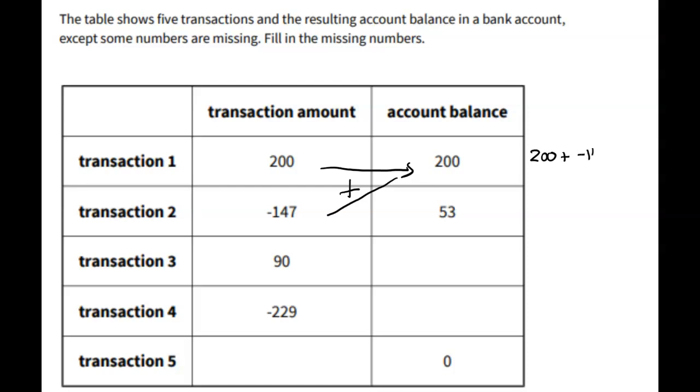In the third transaction, after the $53, you decide to add $90 more.